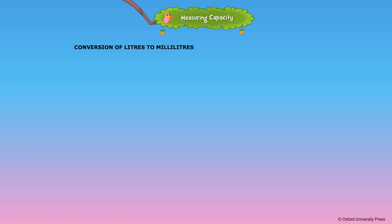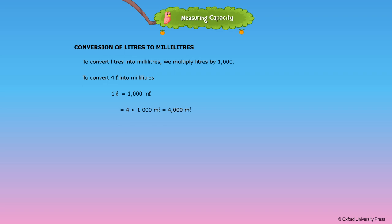Conversion of liters to milliliters. To convert liters into milliliters, we multiply liters by 1000. For example, to convert 4 liters into milliliters: 1 liter is equal to 1000 milliliters, so we multiply 4 by 1000, which equals 4000 milliliters. Thus, 4 liters is equal to 4000 milliliters.